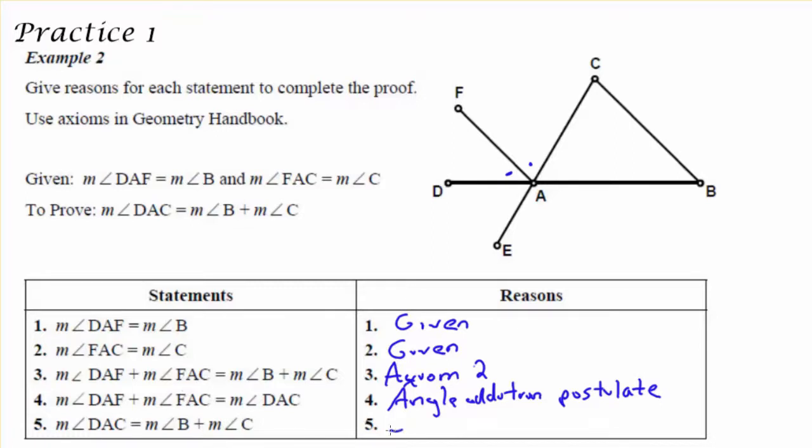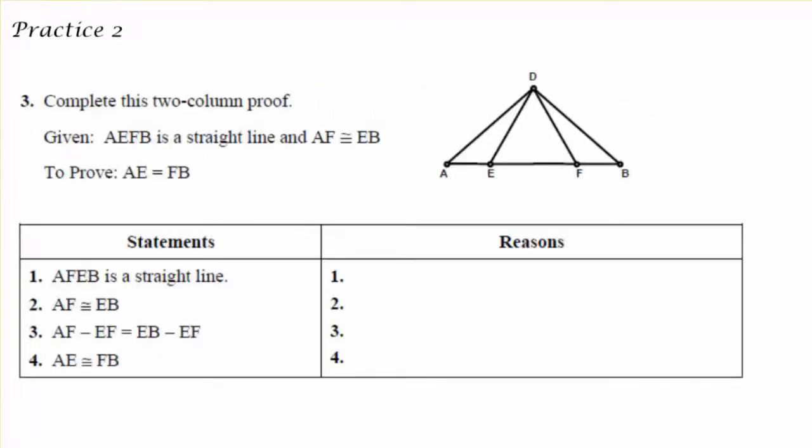Now to say that DAC is equal to B plus C, my remaining statement would simply be to substitute out certain things that I know are equal. So I can use the substitution property of equality. Now let's take a look at another type of proof.